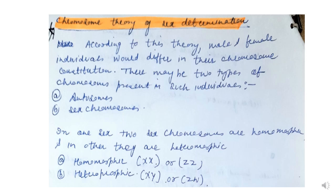Let us discuss what is the chromosome theory of sex determination. According to this theory, male and female individuals differ in their chromosome constitution and there may be two types of chromosomes present in such individuals: autosomes and sex chromosomes.